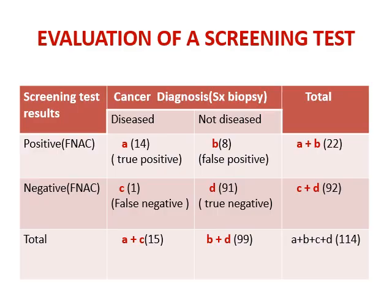Evaluation of a screening test: we draw a two-by-two table with screening test result (positive/negative) on the rows and the gold standard test (such as surgical biopsy for cancer) on the columns showing disease positive and disease negative. Cell A contains true positives — disease positive and screening test positive. Cell B contains false positives — no disease but screening test positive. Cell C contains false negatives — have the disease but screening test negative. Cell D contains true negatives — no disease and screening test negative.